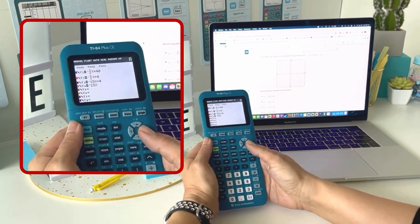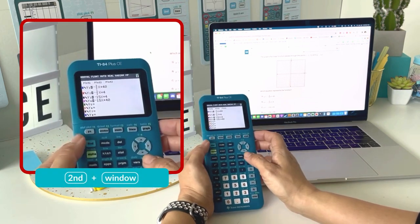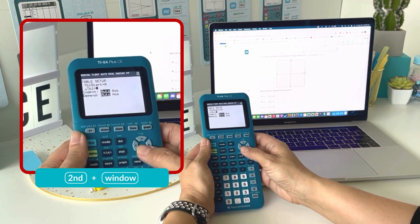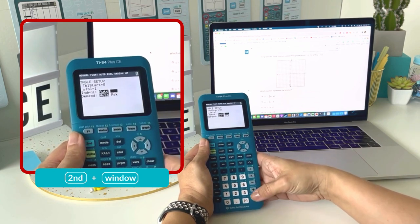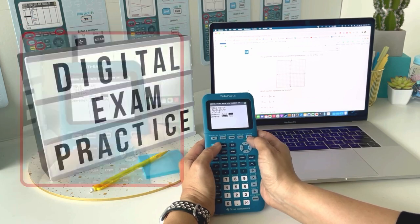Next I'm going to go to table set by pressing second window, and instead of the independent being auto, I'm going to choose ask. This way I can go straight to the coordinate I'm looking for.